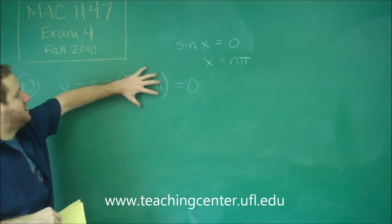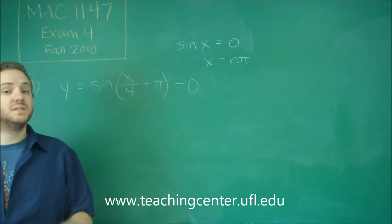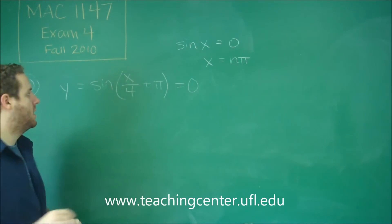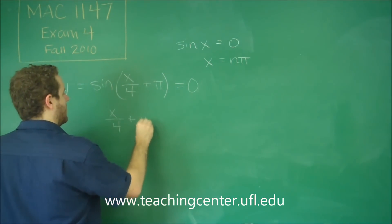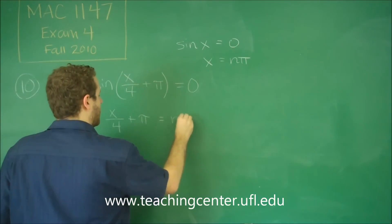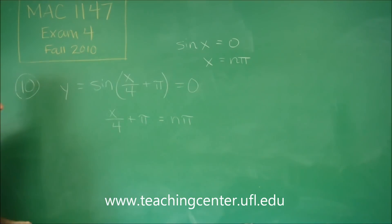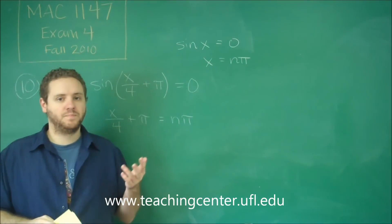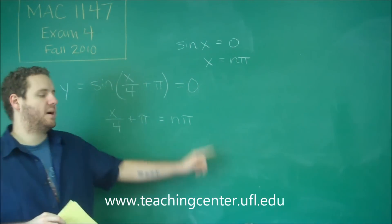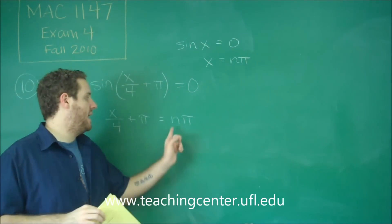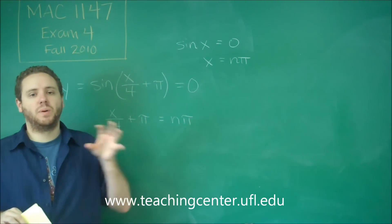So this whole interior part has to equal n pi if we want this function to equal 0. Now we set those two things equal to each other: x over 4 plus pi has to be n pi. Now we just want to solve for x. You can see here, if you subtract pi — and n is any integer, so this means any integer of pi.